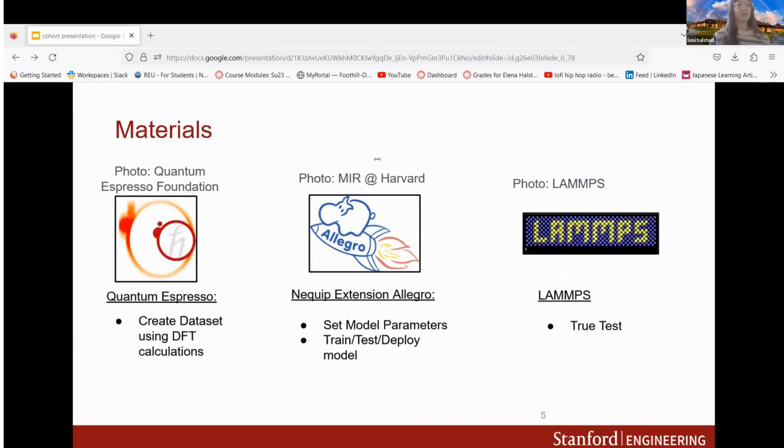My materials for this project was Quantum Espresso which I used to create my dataset using DFT calculations, followed by the NequIP extension Allegro which I used to set my model parameters and then do the train, test, and deploy steps. And then for LAMMPS this is where I did my true test, comparing the model output for the properties and dynamics of my material.